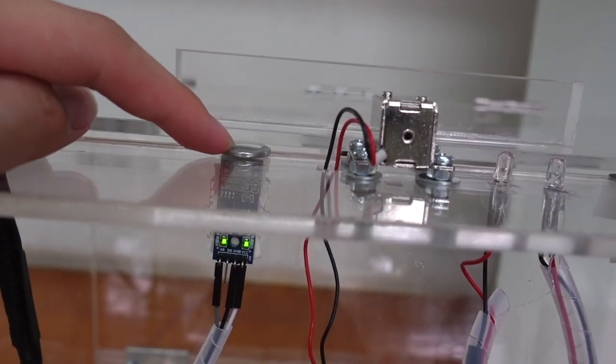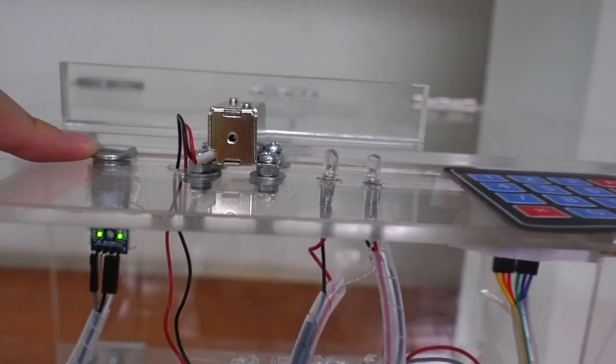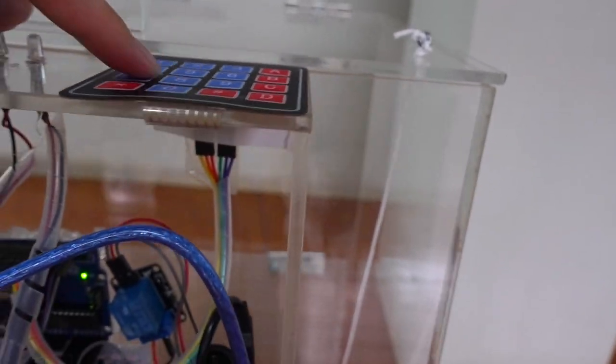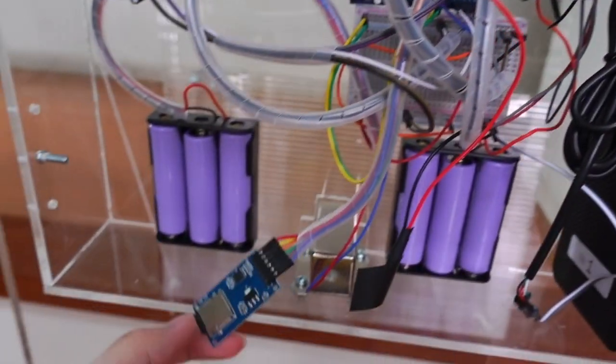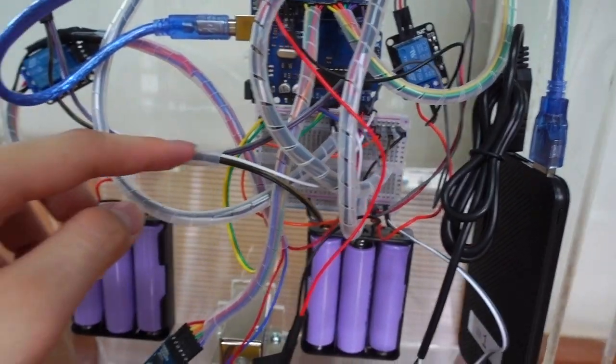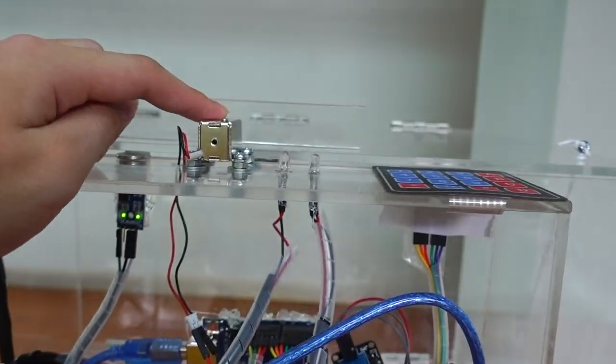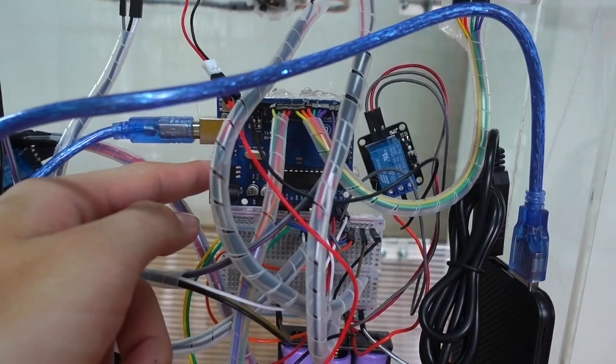The hall sensor detects the presence of magnets and tests whether the lid is closed or not. The keypad here, the data is saved into this SD card. And another circuit is basically with the solenoids, so the Arduino sends instructions.